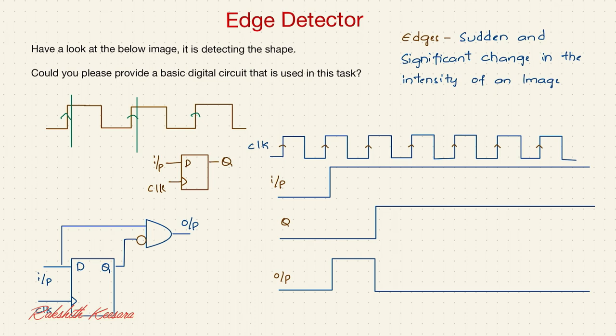So whenever there is a rising edge, the D flip flop detects the input. So whenever there is a rising edge, after a small delay, it gets the input.